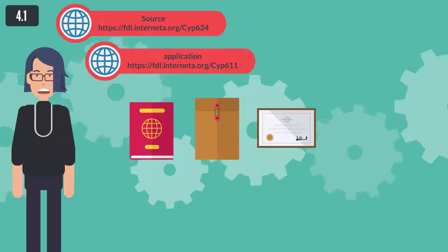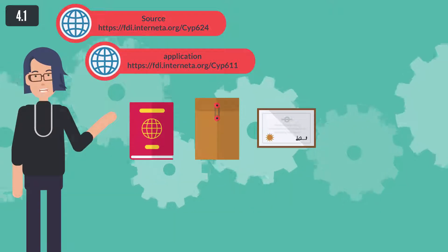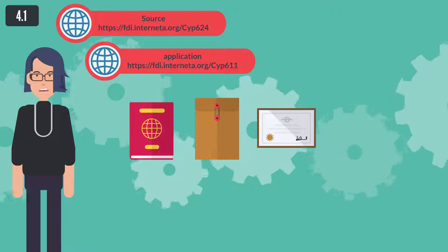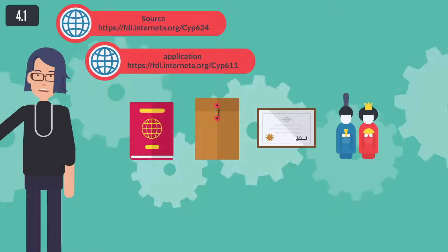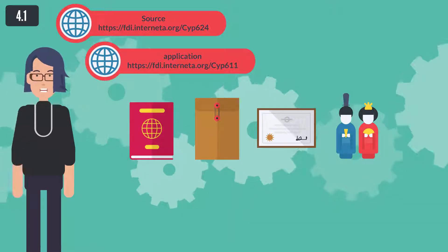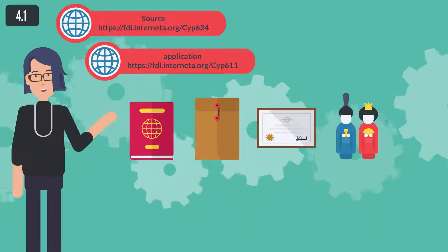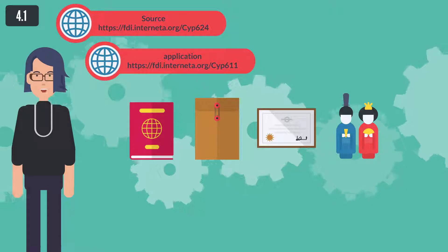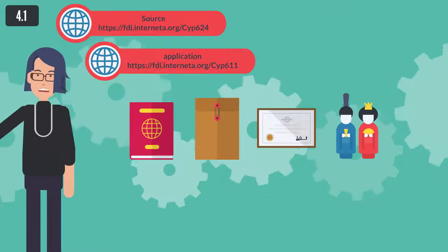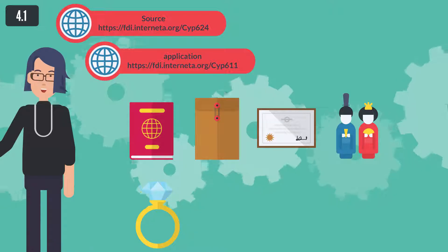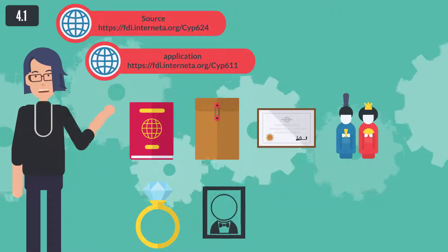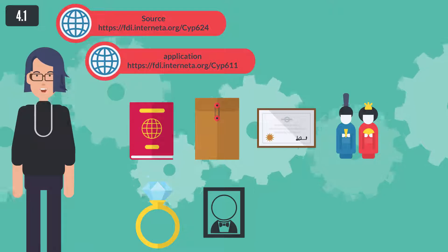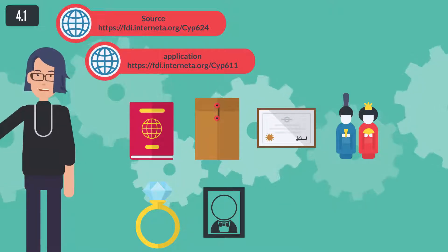D. In the case of a spouse of a union citizen and direct descendants under 21 or who are dependents of the citizen and those of the spouse, proof of existence of a family relation and that the said family members are dependents. E. In some cases, a document issued by the relevant authority in the country of origin certifying that they are dependents or members of the household of the union citizen, or proof of serious health grounds which render personal care of the family member by the union citizen absolutely necessary. F. Proof of the existence of a consistent relationship with the union citizen. G. Two passport-sized photographs. It is noted that photographs are now captured during the application submission process.